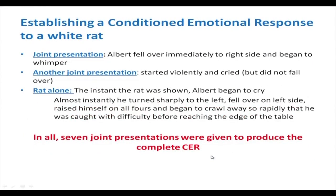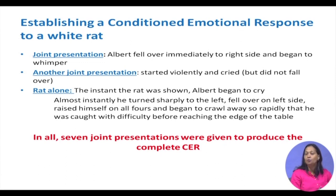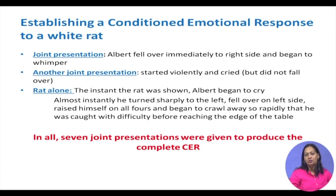When the joint presentation was made again, Albert fell over to the right side and began to whimper. After another joint presentation, he startled violently and cried. When the rat alone was presented — the sound removed — the moment the rat appeared, Albert started to cry, turned sharply to the left, fell over on his side, and crawled away almost reaching the edge of the table. In all, 7 joint presentations were required to create the conditioned emotional response of fear.